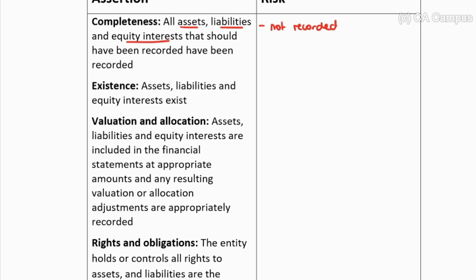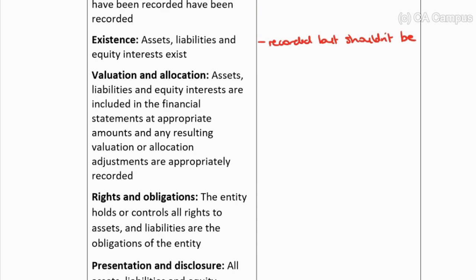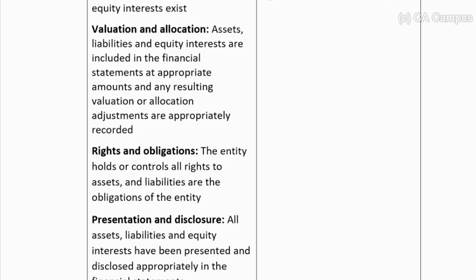For existence: assets, liabilities, and equity interests exist. The risk is that they are recorded but shouldn't have been. For valuation and allocation: assets, liabilities, and equity interests are included in the financial statements at appropriate amounts, and any resulting valuation or allocation adjustments are appropriately recorded. The risk here is that it's recorded at the incorrect amount and that the adjustments are incorrect too.